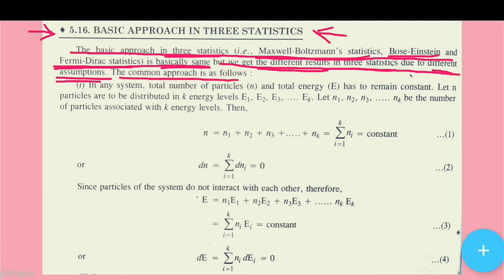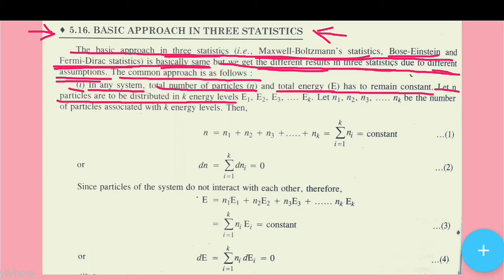The common approach is as follows. First of all, in any system, the total number of particles N and the total energy E must remain constant. Let N particles be distributed into K energy levels E1, E2, E3, and so on up to Ek.